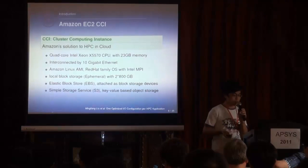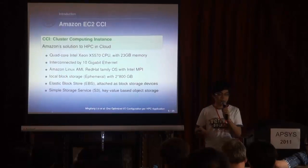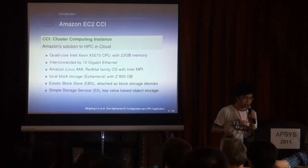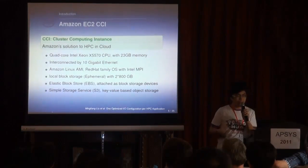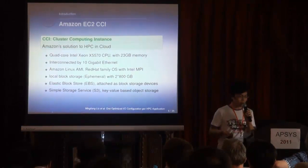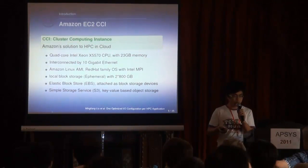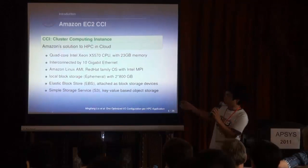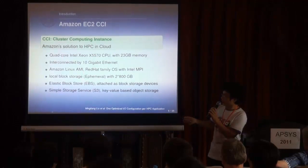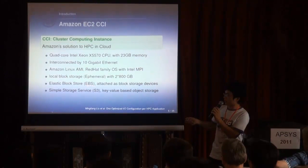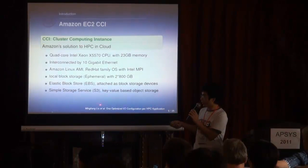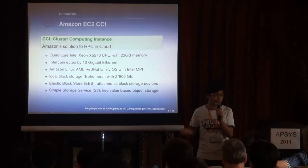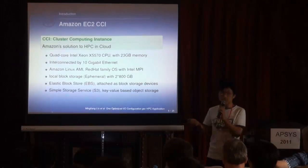This slide illustrates the parameters of the Amazon EC2. Amazon has an HPC computing instance dedicated for HTC, and we can use it to run many HTC applications. There are three kinds of storage devices. The first is ephemeral storage. The second is EBS, elastic block storage. There are also key-value based object storage, named S3. I will show their key properties in the following slides.